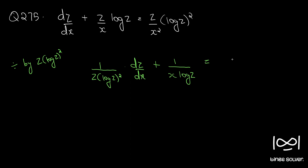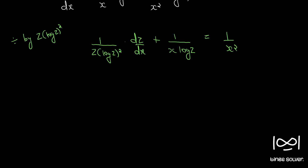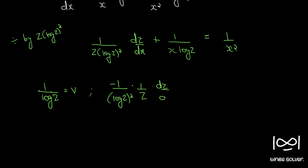Now if we put 1/log(z) equal to v and differentiate both sides with respect to x, we have minus (1/(log z)²) times (1/z) · dz/dx equal to dv/dx.